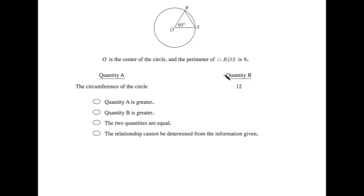O is the center of the circle, and the perimeter of triangle ROS is 6. So what's greater, the circumference of the circle or 12?